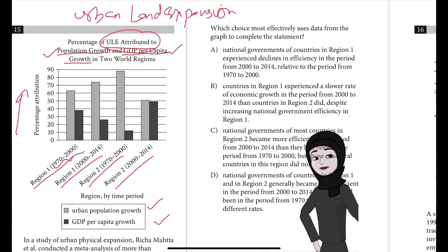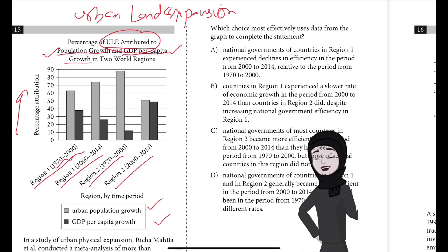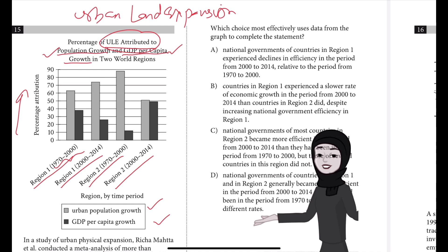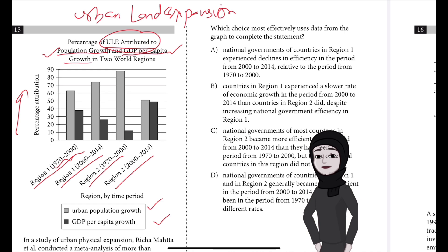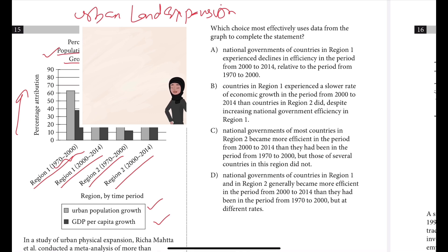We have to choose which answer most effectively uses data from the graph to complete the statement. Option A: national governments of countries in Region 1 experienced declines in efficiency from 2000 to 2014 relative to 1970 to 2000. Option B: countries in Region 1 experienced a slower rate of economic growth from 2000 to 2014 than Region 2 did, despite increasing national government efficiency in Region 1. Option C: national governments of most countries in Region 2 became more efficient from 1970 to 2000, but those of several countries did not. Option D: national governments of countries in Region 1 and Region 2 generally became more efficient from 2000 to 2014 than from 1970 to 2000, but at different rates.